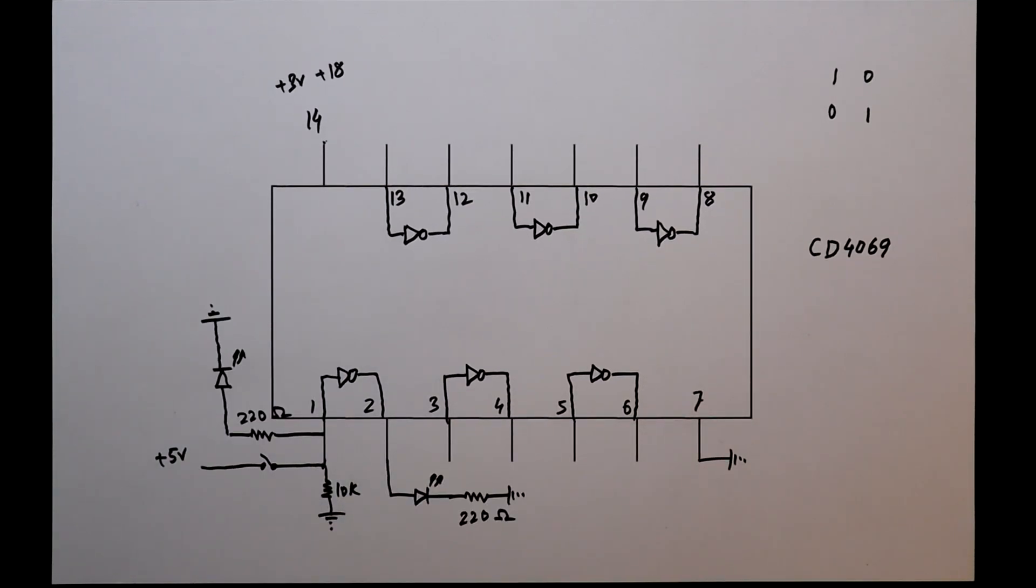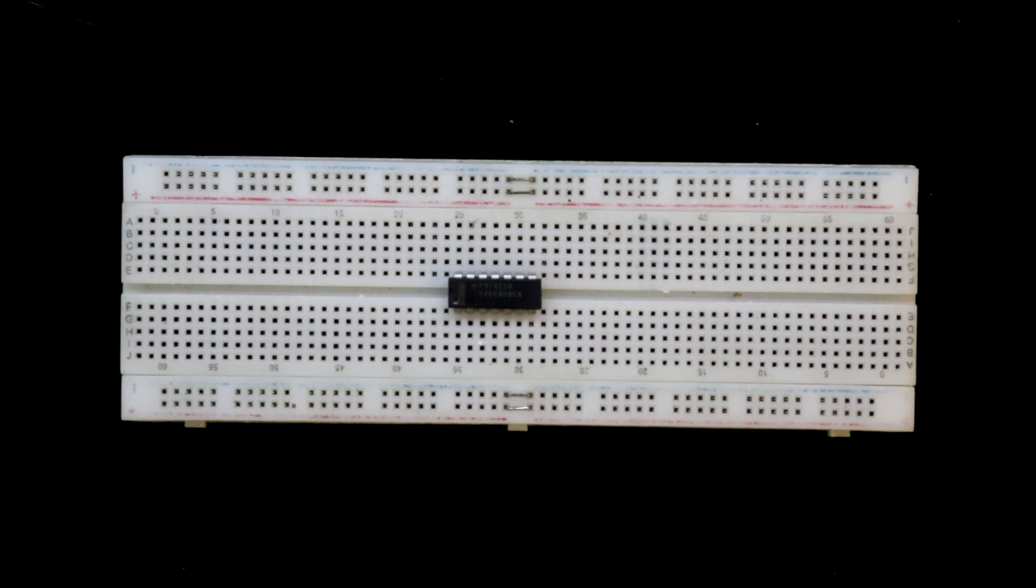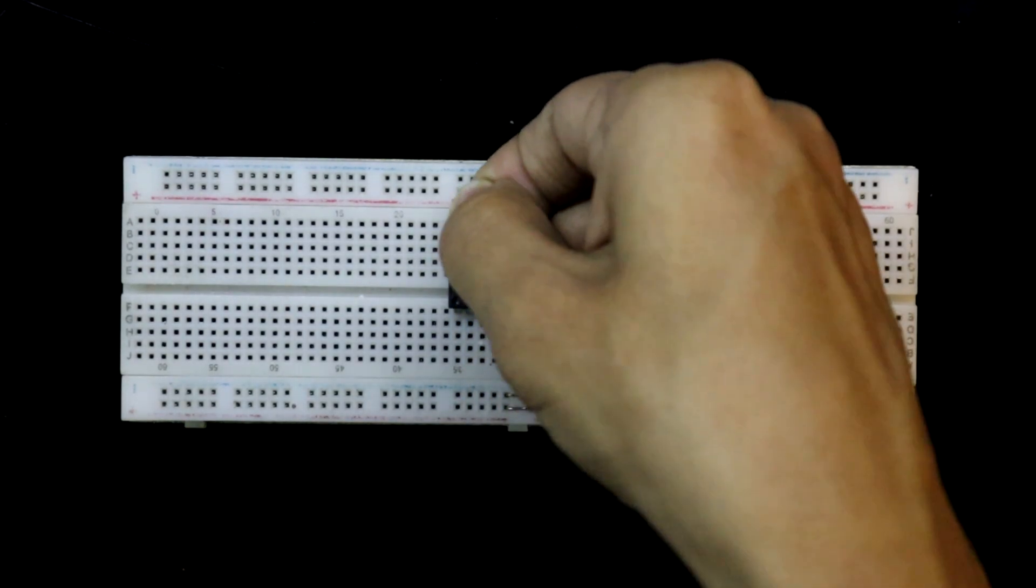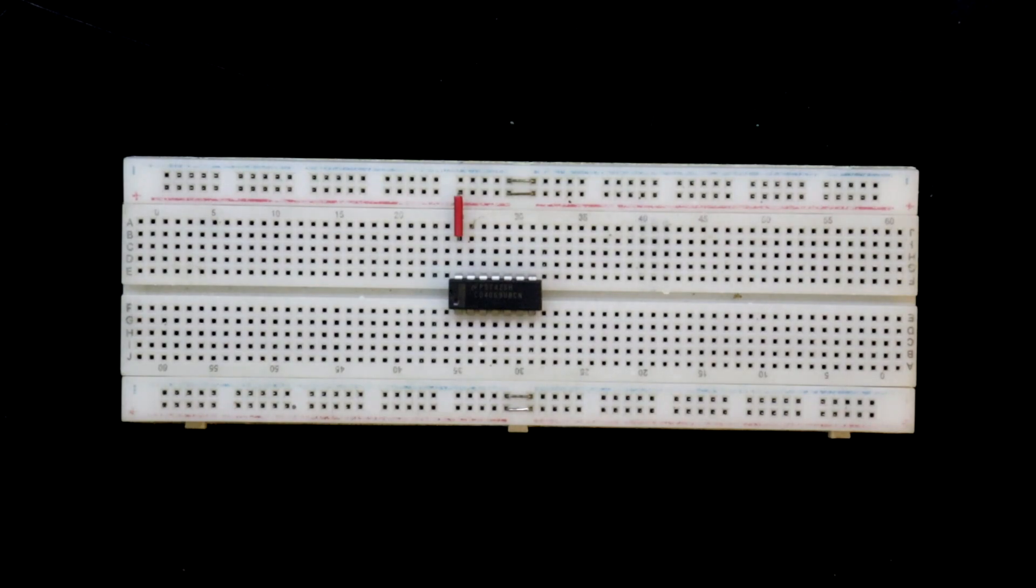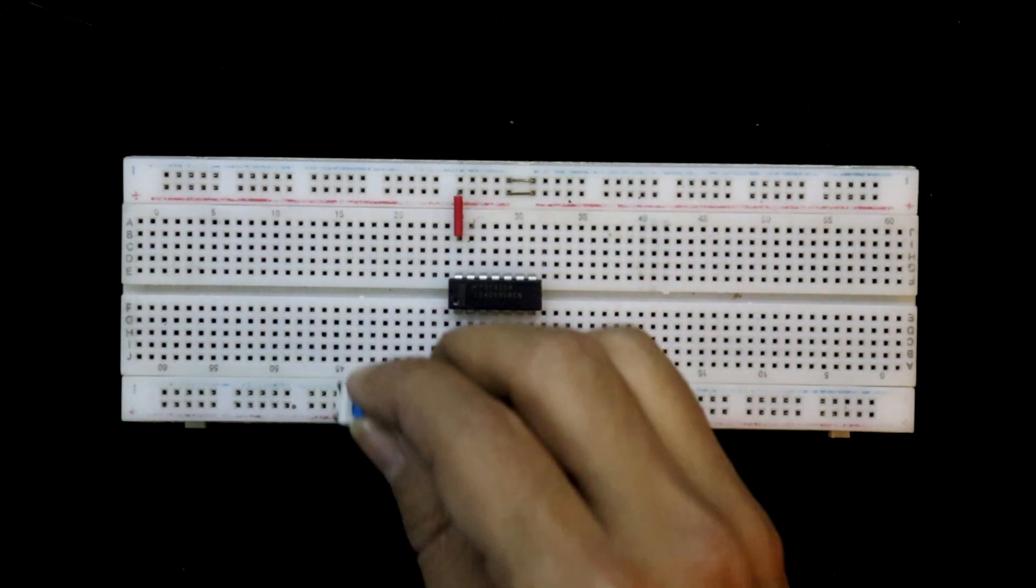Now we'll do this practical on breadboard. This is the IC CD4069. Pin number 14 is connected to the positive rail, 7 is connected to the negative rail. Input switch.